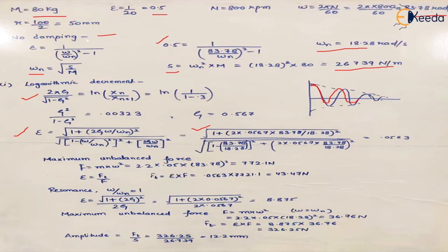Under working conditions, damping is reducing the amplitude to 30% of successive vibrations. So X_N upon X_{N+1} can be written as X1 upon X2. If X1 is 1, then X2 will be 1 minus 30%, which is 0.7. From this logarithmic decrement formula, we can find the value of the damping factor zeta, which is 0.0567.